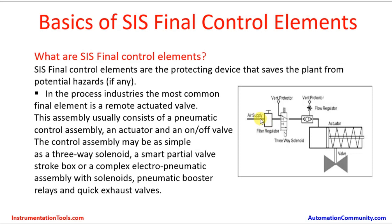The air supply comes into a filter regulator which absorbs moisture, then passes through a three-way solenoid valve. The solenoid either passes instrument air to the actuator body, where air works against the spring pressure to push it down and open the valve, or in an emergency situation the solenoid shifts so that the air is vented out through the vent port. The spring then acts with its force to close the valve. This is a typical on-off assembly and its components.